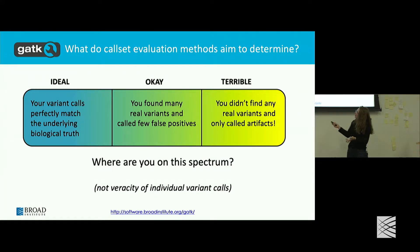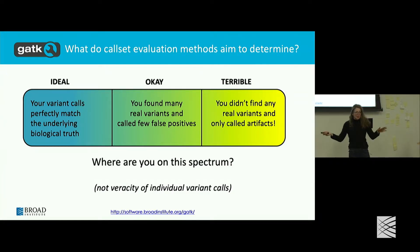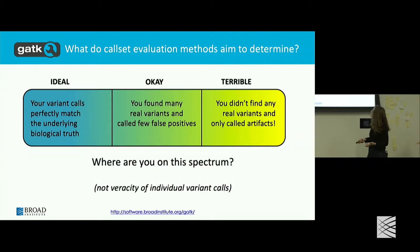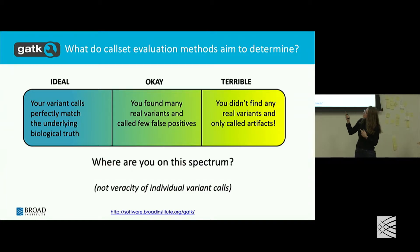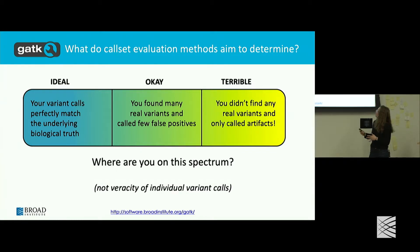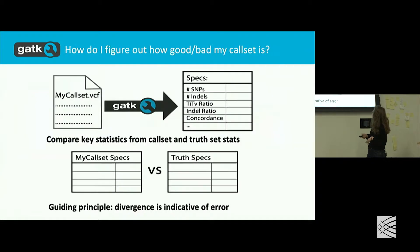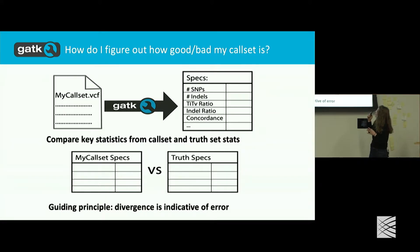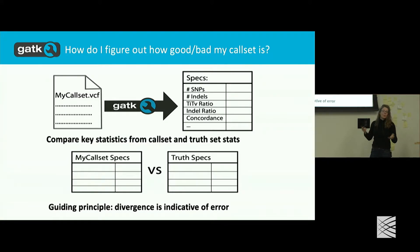So how good is your call set? You want to figure out where you are on this continuum. If you're in the terrible section, you're not a bad person — you might have a bug in your pipeline, there might be some issues, or you might just need to do some additional filtering. If it's ideal, then raise questions about maybe why you're running this specific data if it's already a truth set. So you'll probably be somewhere in the middle, and there are a bunch of different metrics I'm going to talk about that will help you figure out where in that spectrum you are.